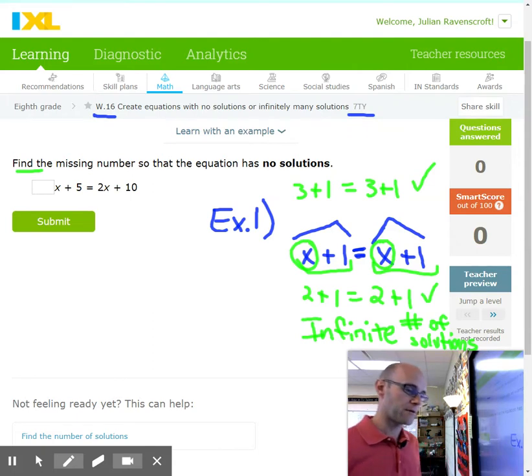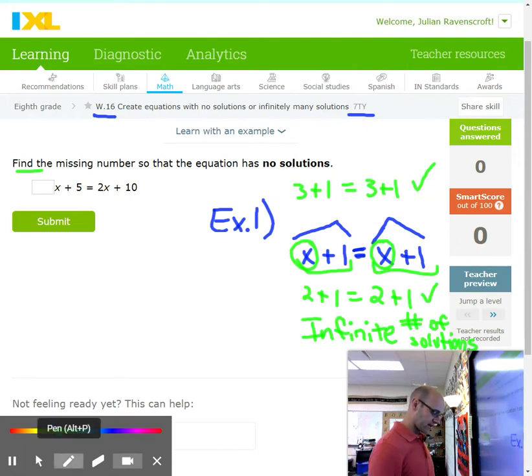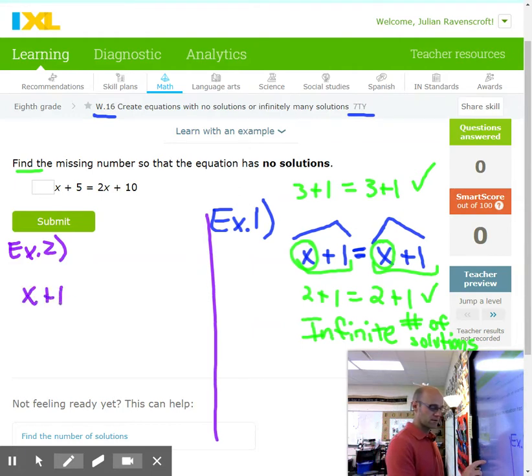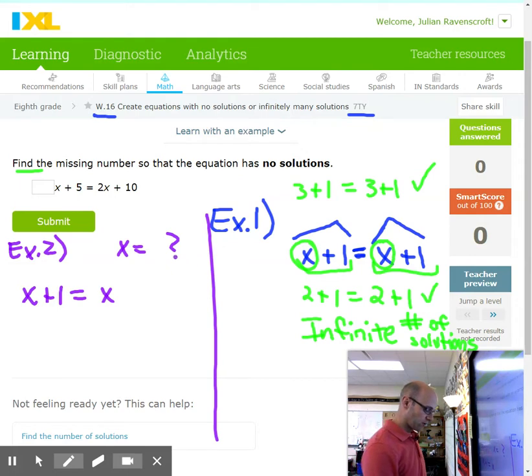Now your other option is when they're almost identical, but just slightly different. Let me make an example two. Imagine that we have X + 1 and it's equal to X. You tell me, what can X equal?